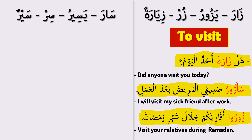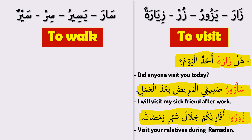سار يسير means 'to walk.' سار (saara) is the past form, يسير (yasiru) is the present form, سِر (sir) is the command form, and سير (sayr) is the verbal noun. Let's also see some Arabic phrases for this verb.